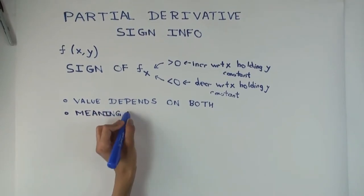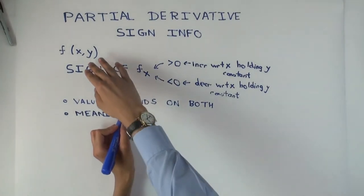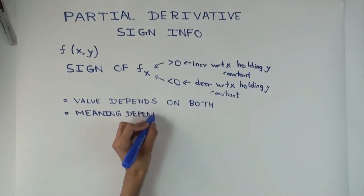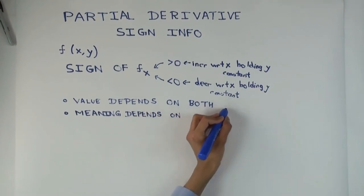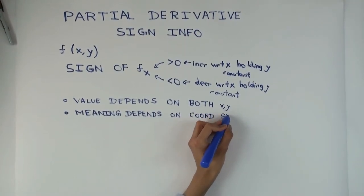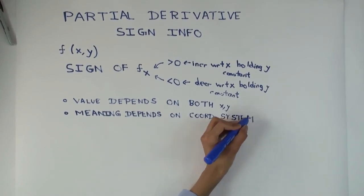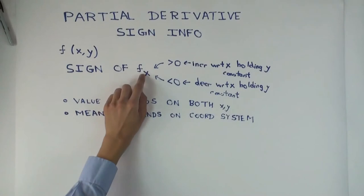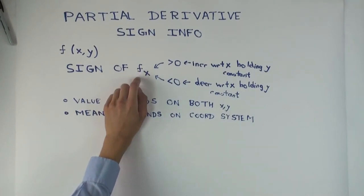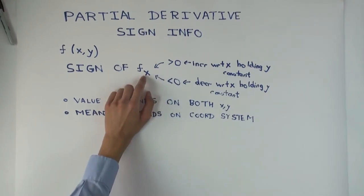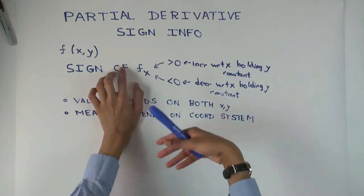That basically means that if I redefine my variables so that instead of y I have a new thing, then the partial derivative with respect to x — the meaning of that changes. The sign of f sub x need not be the same everywhere: it could be positive some places, negative some places. Because f sub x is actually a function of x and y, and at different points the function could behave differently.